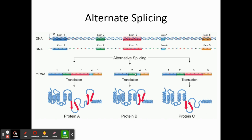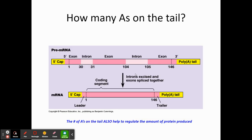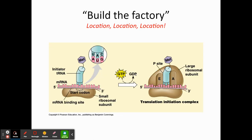Another level of control relates to how long the messenger RNA remains active in the cytoplasm — this is a result of how many adenines are put on the poly-A tail. A long poly-A tail means more protein is built; fewer adenines means less protein. Also, location matters: small signals at the beginning of the messenger RNA guide it to the appropriate location — either a cytoplasmic ribosome or a ribosome on the rough endoplasmic reticulum.